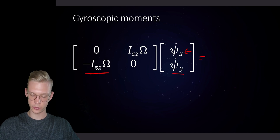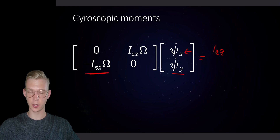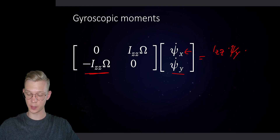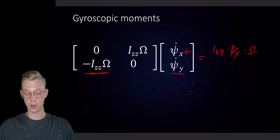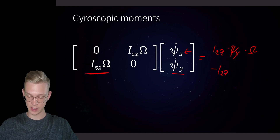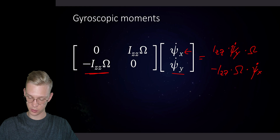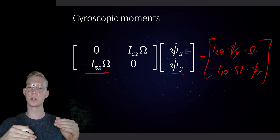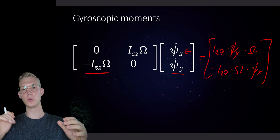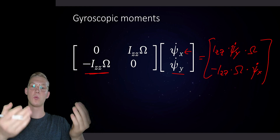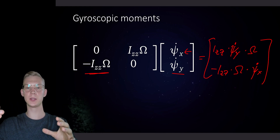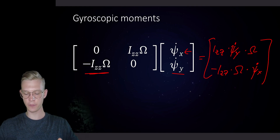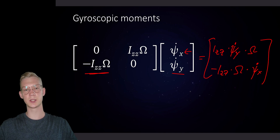If we multiply that out, we get Izz (our rotational inertia) times cy-dot — this is our coupling — times our rotational speed omega. The moment around y will be minus the rotational inertia times cx-dot. So the gyroscopic moments introduce a coupling in our system: we can't look at x and y directions separately, because moving in x creates moments that move us in y, and vice versa. This coupling is a very important property of systems with gyroscopic moments.